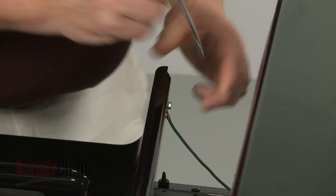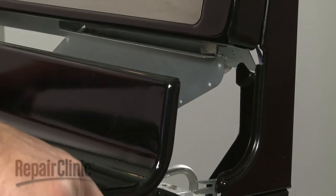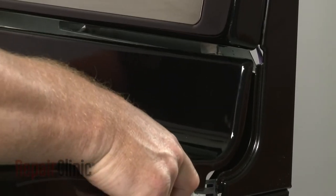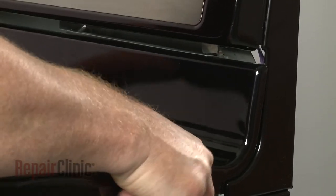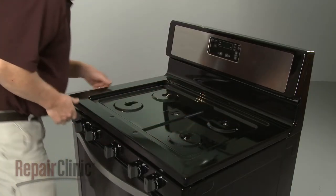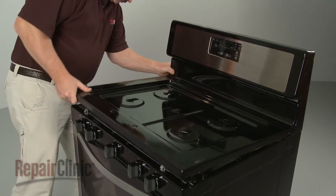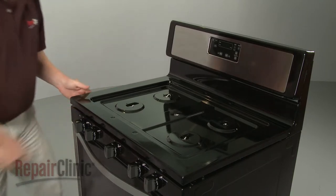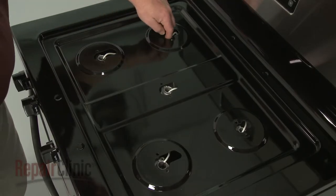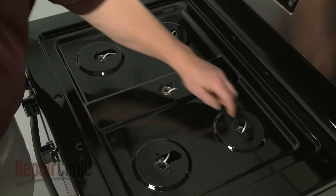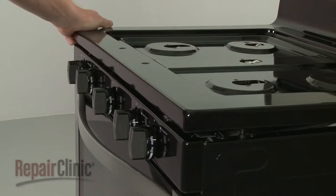Reposition the right side of the main top first by hooking the rear edge on the mounting tab so the top is seated under the vent. Now position the rear edge on the left mounting tab. Making sure the orifice holders protrude through the holes in the main top, snap the front edge into place.